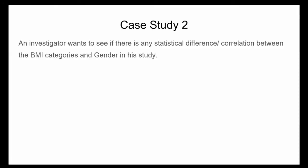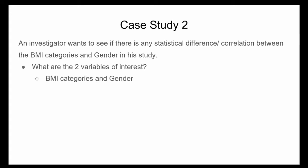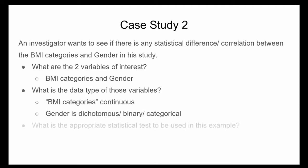As an example, an investigator wants to see if there are any statistical differences between BMI categories and gender. The two variables of interest are BMI and gender. The BMI is continuous and the gender is categorical. The appropriate statistical test to use in this example is the chi-square test.